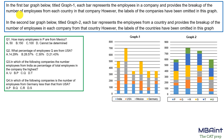Welcome. This is an easy set of data interpretation. Let's see how to solve this fast. In the first bar graph, titled Graph One, each bar represents the employees in companies and provides the breakup of the number of employees from each country in that company.